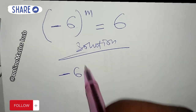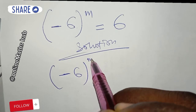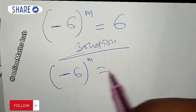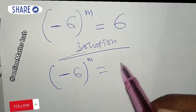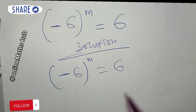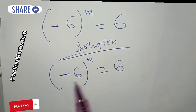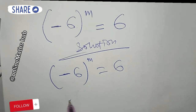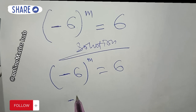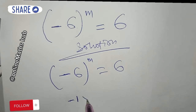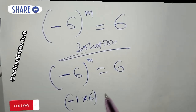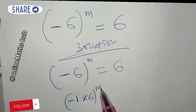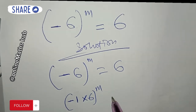So let's proceed. We have negative 6 to the power m is equal to 6. First, I want to split this — I can write negative 6 as negative 1 multiplied by 6, all raised to the power m, and that is equal to 6.